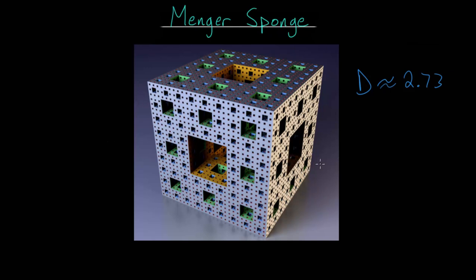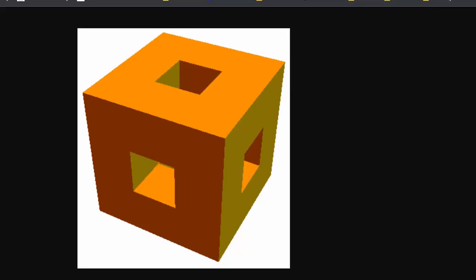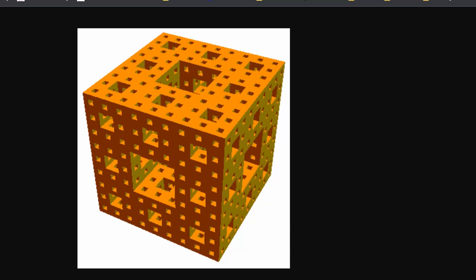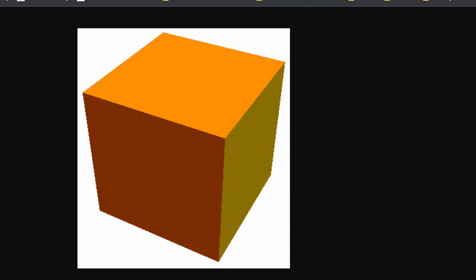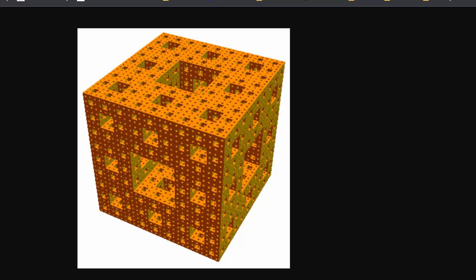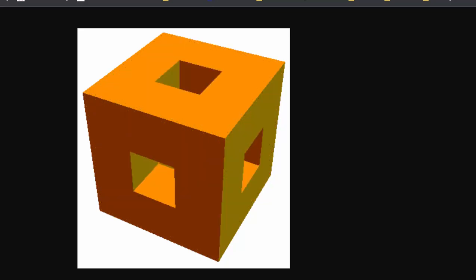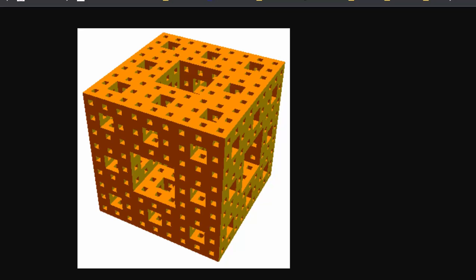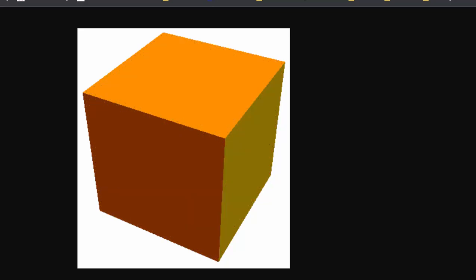Now we can look at some animations of how this is actually created so that it's a little bit more visual, since this can be a little bit complicated to visualize. This animation shows that we take this original cube, we split it into 27 smaller cubes, and then remove a cube from each of the six faces, and we remove the cube from the center.